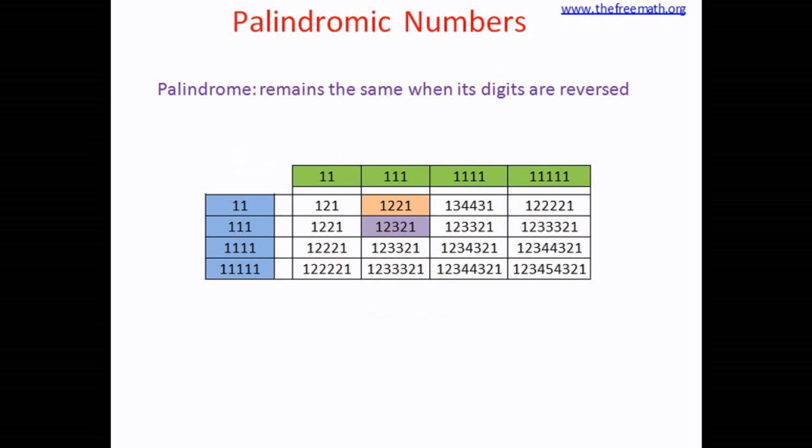Now you can see that all the numbers that we are multiplying are all palindromes, and all the products that we get are all palindromes as well. And you can see some very interesting beautiful patterns here. For example, if you look at the first column of product, you can see 121, 1221, 12321, and so on.